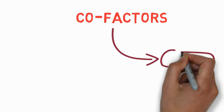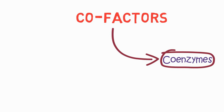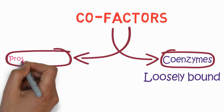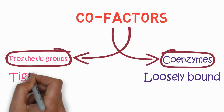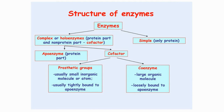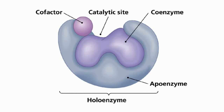Cofactors can also be classified on the basis of the nature of their attachment to the enzyme. The first class is known as coenzymes — coenzymes are those substances which are loosely bound to the enzyme. The second class is prosthetic groups — prosthetic groups are usually tightly bound to the enzyme. Enzymes are either simple proteins or complex holoenzymes, which contain an apoenzyme (the protein part) plus a cofactor.